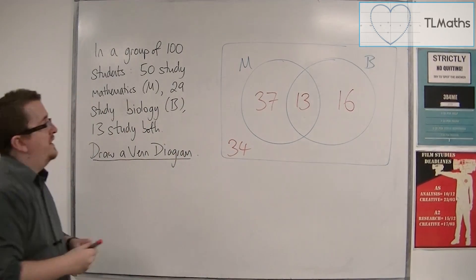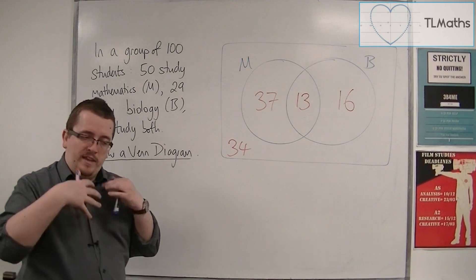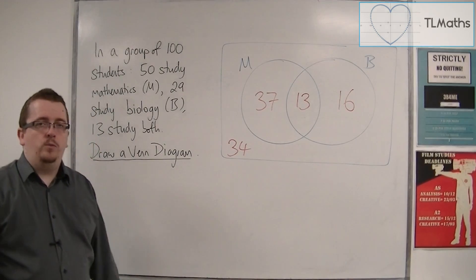And that is how we can convert this into a Venn diagram. Start with the intersection and work your way outwards.